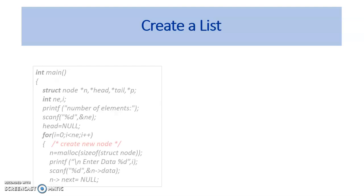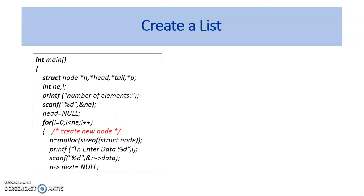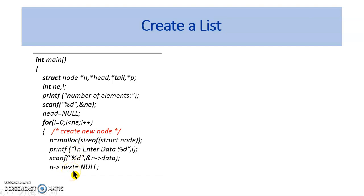Let us see the code for creating the list. The pointers head, tail, and p of type struct node are declared. In order to create the list, the first step is to get the number of elements in the list. Initially, set head equal to null. Use the for loop to perform the creation of a node and to link it to the list in each iteration by varying the variable i from 0 to 2. The malloc function will allocate memory for the new node n. Get the data from the user and set as n.data. Then set n.next equal to null.